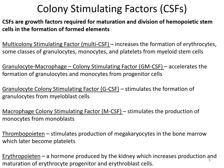Colony stimulating factors are required for the maturation and division of hemopoietic stem cells in the formation of formed elements. Multi-colony stimulating factor increases the formation of erythrocytes, some granulocytes, and monocytes. Thrombopoietin stimulates the production of platelets. Erythropoietin stimulates the production of erythrocytes.